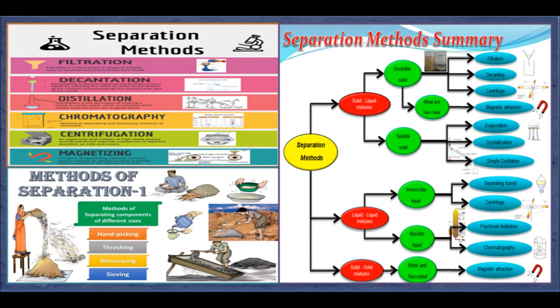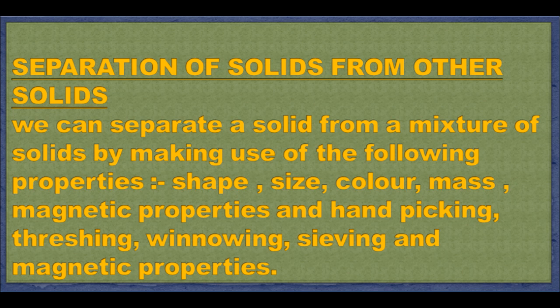Methods of Separation. Separation of a mixture means the removal of one substance from a mixture of two or more substances. You can easily separate assorted candies by hand picking them. However, separation by hand becomes difficult when components are tiny and in large quantities, or not visible to the naked eye. The method chosen depends on properties in which the components differ. For separating solids from other solids, we use properties like shape, size, colour, mass, magnetic properties and solubility. Common methods include hand picking, threshing, winnowing, sieving and magnetic separation.